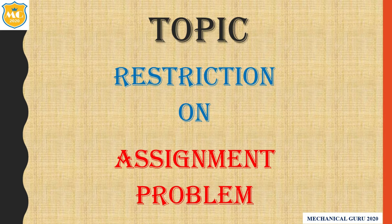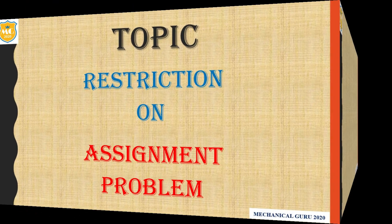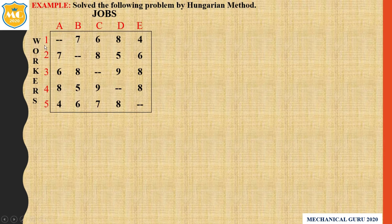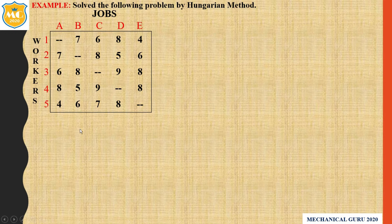Now we go to the example. Solve the following problem by the Hungarian method. There are 5 workers and 5 jobs. Here the dot represents restriction on assignment, so in those cells we have to put capital M. We cannot assign or cross those cells. Let's see how to solve the problem.